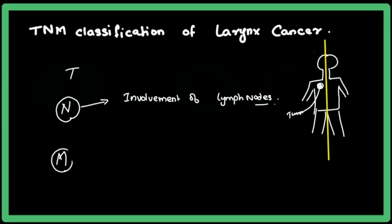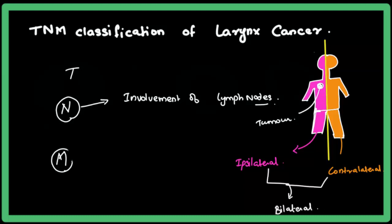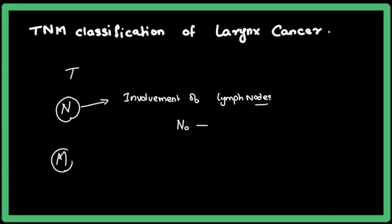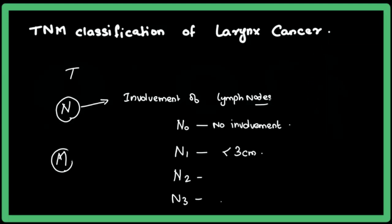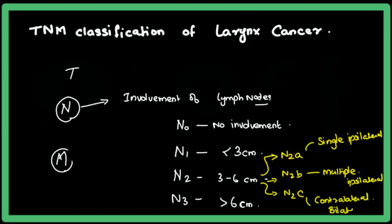If the tumor is present on one side, the same side is known as ipsilateral and the opposite side is contralateral. N0 means no lymph node involvement. N1, N2, N3 are based on the size in centimeters and which lymph nodes are involved. N2 is divided into A, B, and C: N2A means single ipsilateral lymph node involved, N2B means multiple ipsilateral lymph nodes involved, N2C means contralateral or bilateral lymph nodes involved.